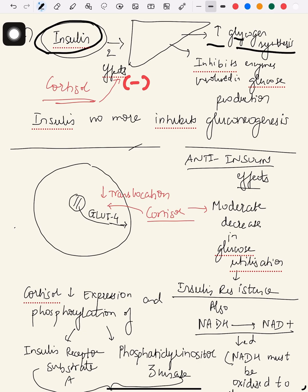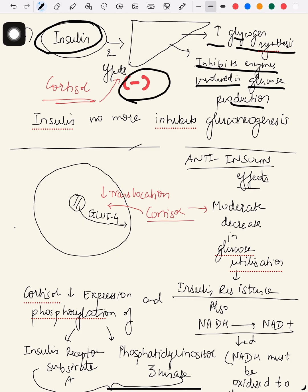We know that the effects of insulin include: it increases glycogen synthesis — glycogen is the form of glucose stored in the liver — and it also inhibits enzymes involved in glucose production, so glucose is formed less because of insulin in the liver.